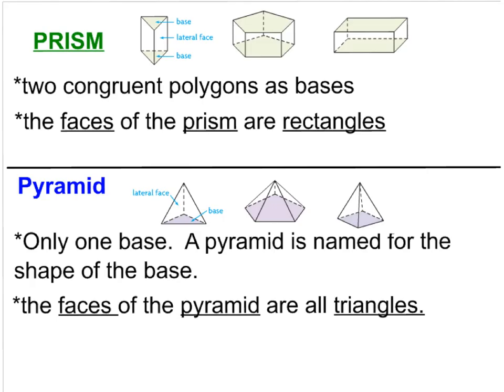There are three main families I want to teach you about: polyhedrons. The first two are prisms and pyramids. A prism has two congruent polygons as bases. The faces of the prism are all rectangles. Looking at this one, I have two congruent polygon bases — a triangle and a triangle — and all the faces are rectangles. So we would call this a triangular prism.